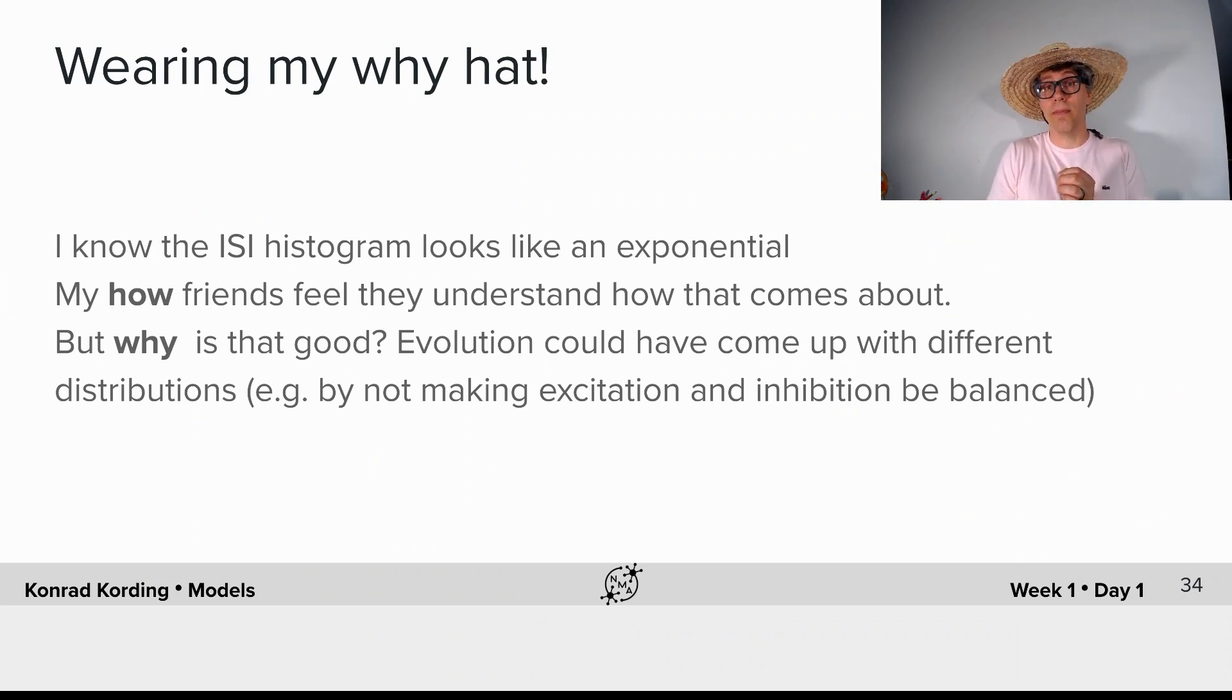But why is that good? Evolution could have come up with different distributions. For example, evolution could make excitation and inhibition not be balanced. So we want to ask the question that's behind it. Why is it the way it is?